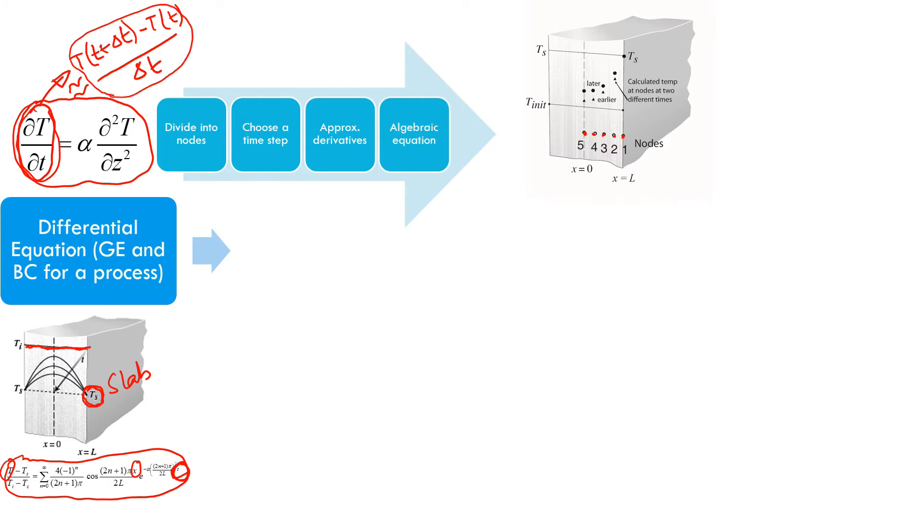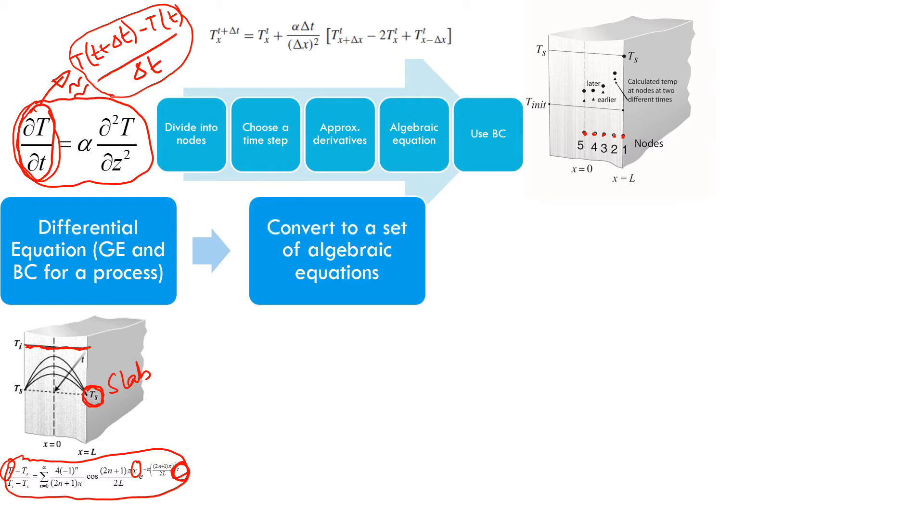And then we get an algebraic equation that looks like this. So if I change both this derivative and this derivative using this kind of difference equation that are approximation, we're going to eventually get an equation like that. And then there will be an equation for every point. So we'll have a set of equations and then we'll solve it.